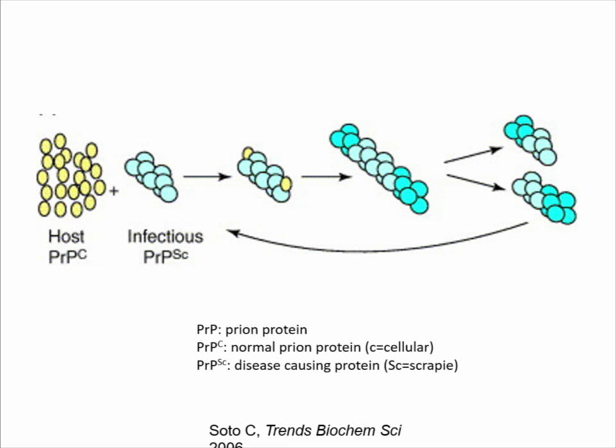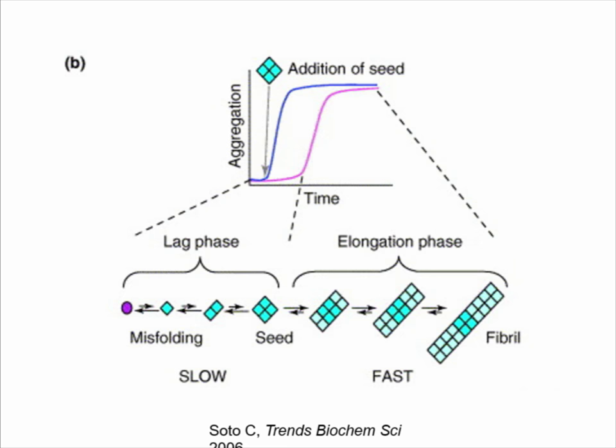Once you have the abnormal prion proteins, they tend to aggregate and form seeds, and then they cause oligomers and fibrils, and you get this kind of exponential curve where you get rapid spreading. So that's what happens at the molecular level.